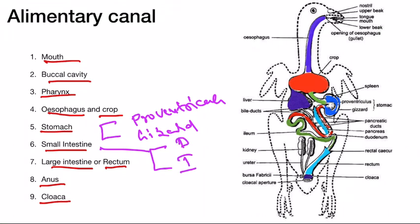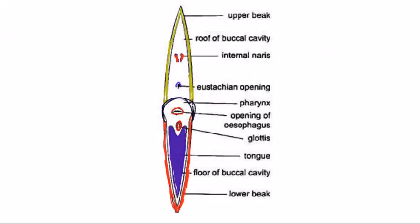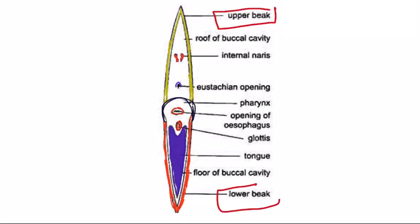The mouth is a wide slit or wide aperture, bounded by two structures called the upper beak and the lower beak.